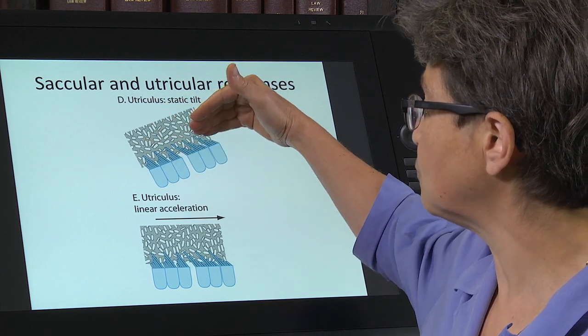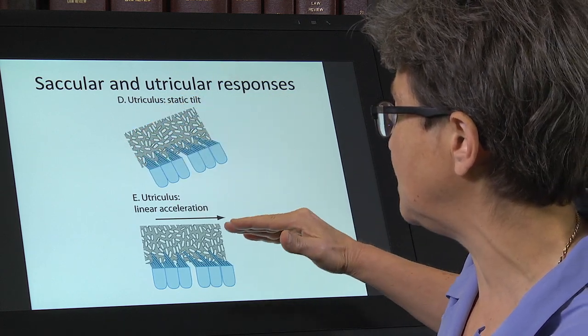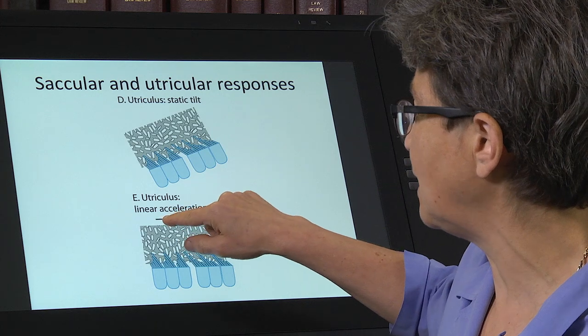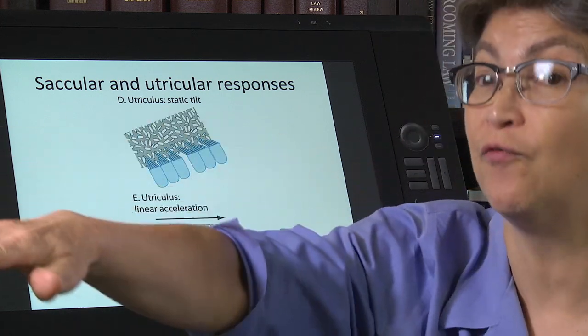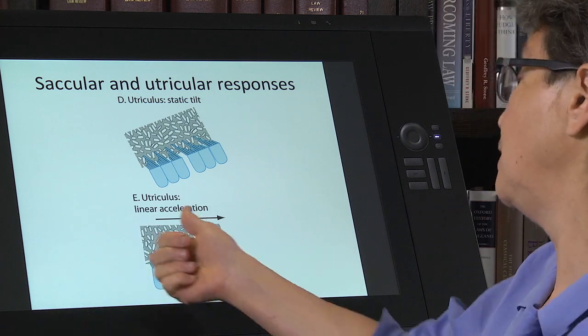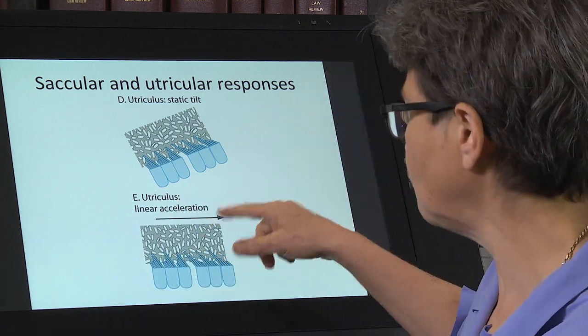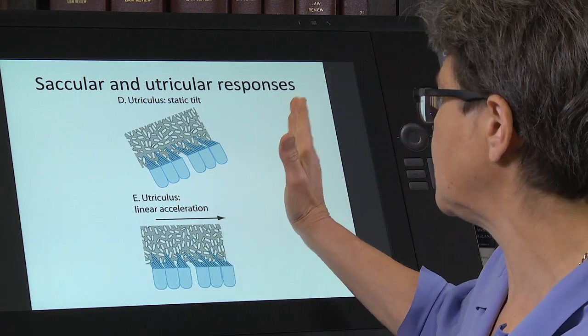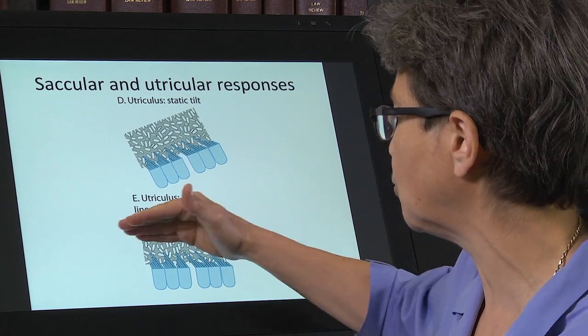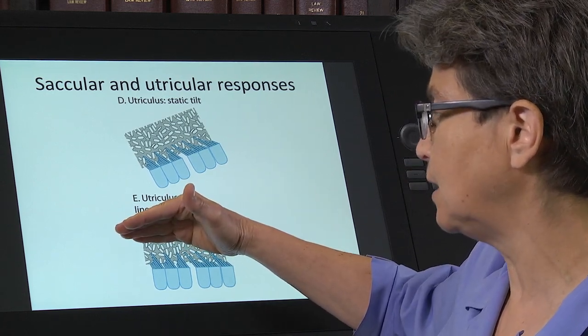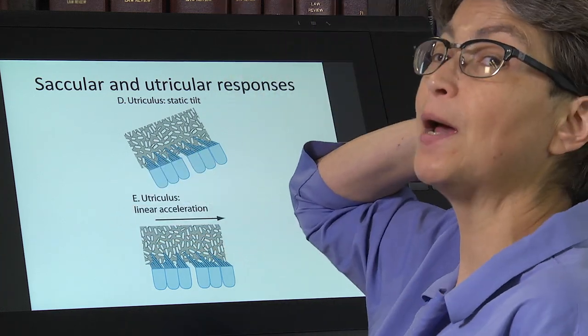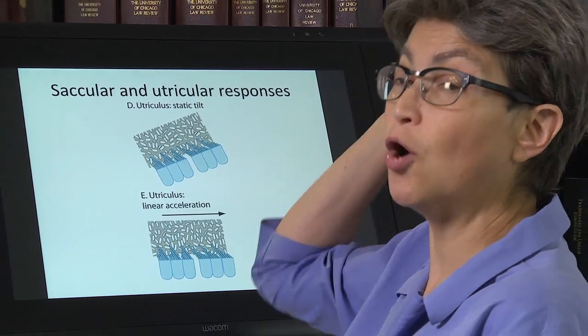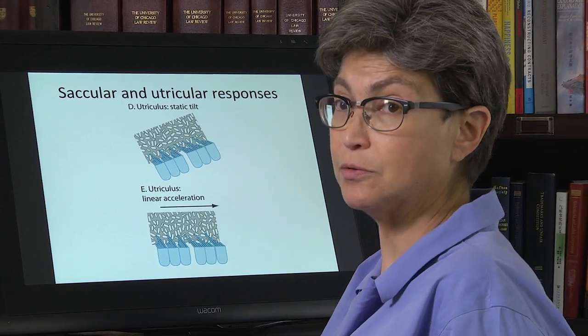But the response is absolutely the same as though one were not tilted and moving in this direction, whichever direction this is. So let's say this is forward. If we move forward, the otoconial mass is displaced backwards. And if I tilt my head backwards, the otoconial mass is also tilted backwards.